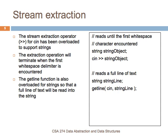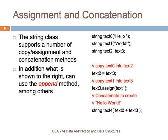The string library also has operations for assignment and concatenation. On the right-hand side of this slide, three strings are created: text0, text1, text2, text3. You can do a copy assignment of the value of text0 into text1, creating a new copy. You can also use the assignment method, which does the same thing as the assignment operator. Finally, you can concatenate strings with the plus operator — for example, constructing text4 by concatenating text0 and text3 would produce 'hello world', with a space because there is a space at the end of 'hello'.